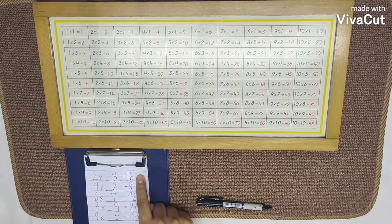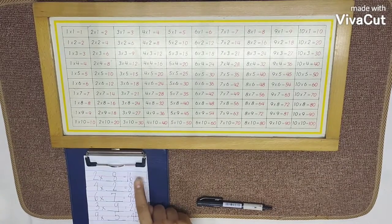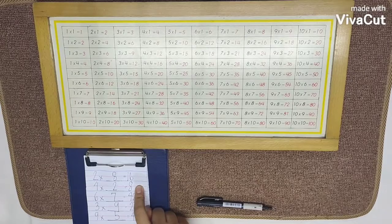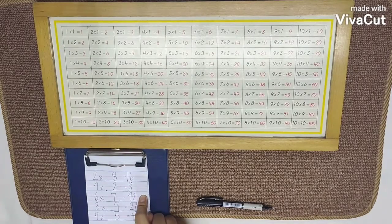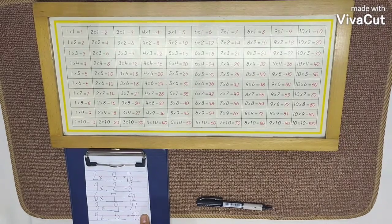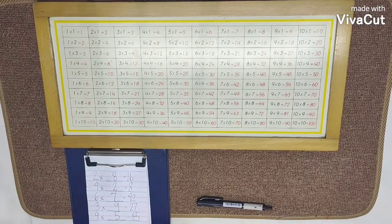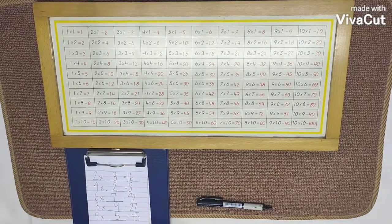Let's read our answers. 2 times 8 equals 16. 4 times 2 equals 8. 6 times 7 equals 42. 3 times 9 equals 27. 9 times 5 equals 45. Now that I've shown you how to work with this chart, you may do this on your own.